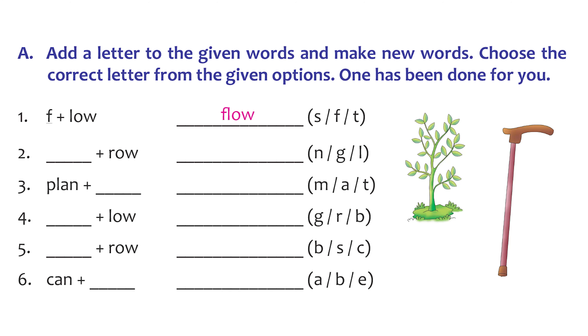Now let's learn some new words. Did you know that if we add a letter in front of a word or at the end of a word, it becomes a completely new word? Let's try it. We have this exercise on page 25. The first word is 'low' — L-O-W. When we add the letter F to it, we get the new word 'flow', which talks about the flow of water.